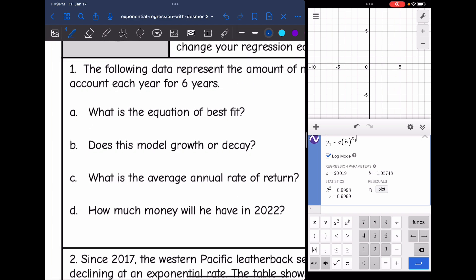A is 2019. So it'll be Y equals 20,019 times my B value is 1.057. So I'm going to round that to 1.06 to the X. And then the next question is, does this model growth or decay? That would be growth because our B value of 1.06 is greater than 1.